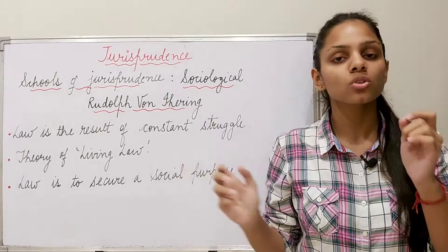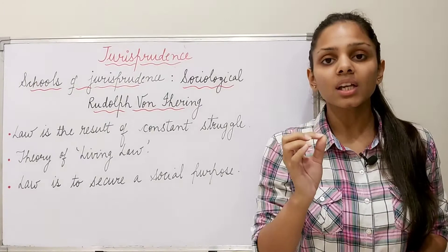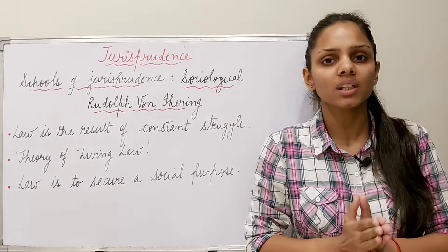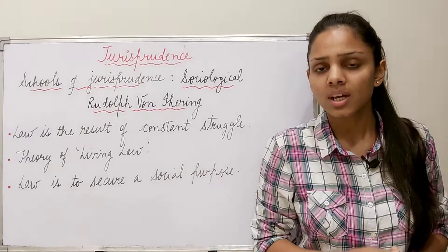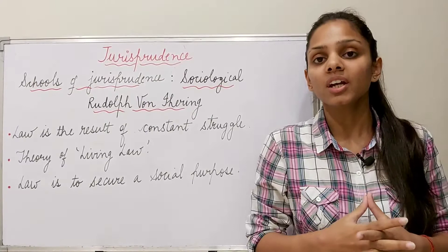In Rudolph von Ihering's legal theory, we will be discussing his jurisprudence of interests — the theory he gave — and we will understand it with the help of three important tenets. But before we move forward, let us understand what 'interest' means and how many types of interest Ihering has discussed.